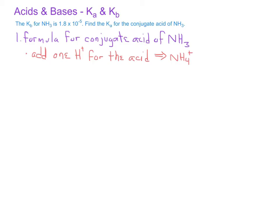Now, in order to find the Ka for NH4 plus, we need to know the relationship between Ka and Kb for a conjugate acid-base pair. We recall that Ka times Kb equals Kw.